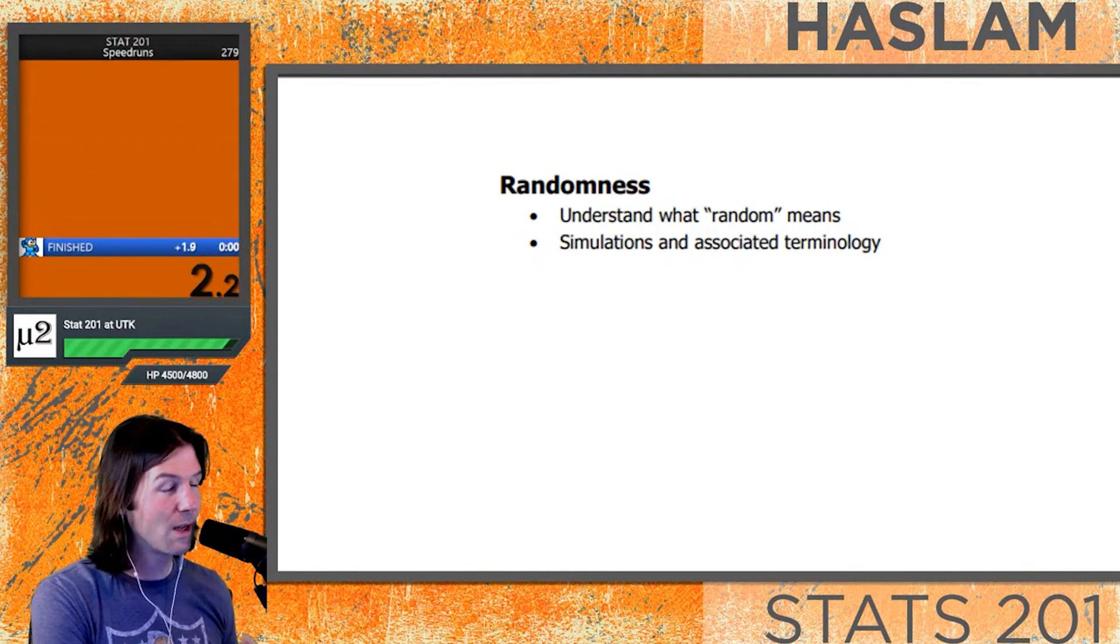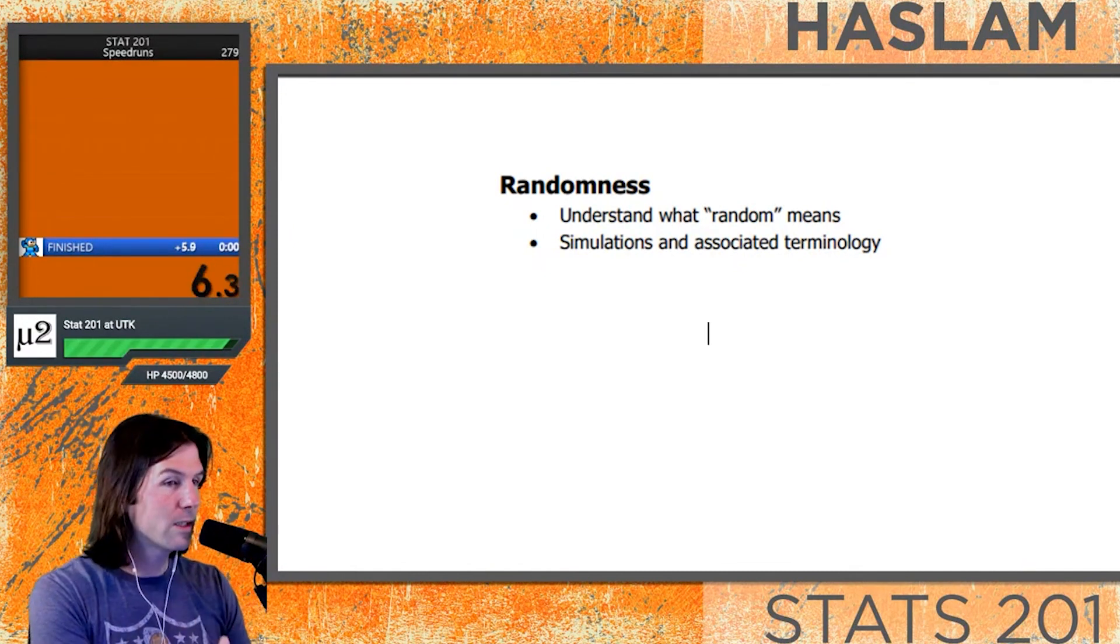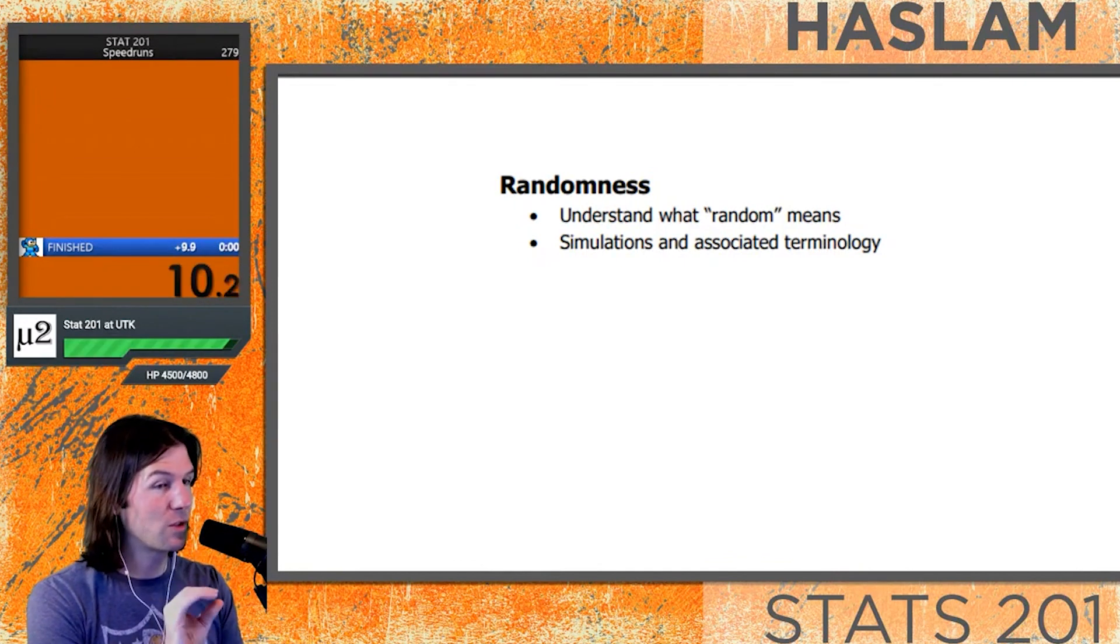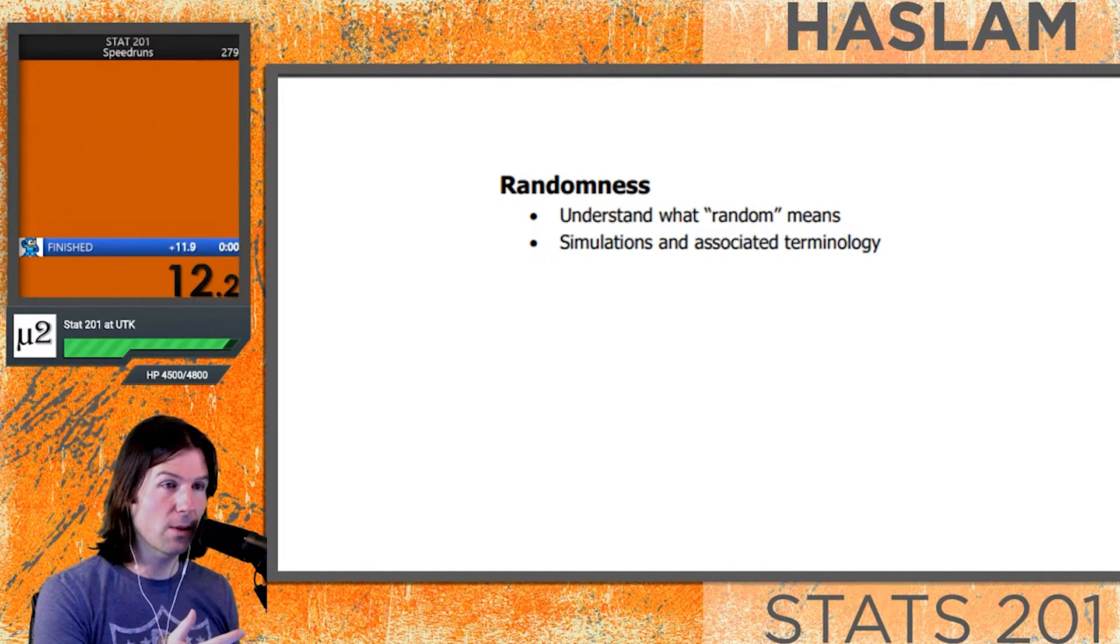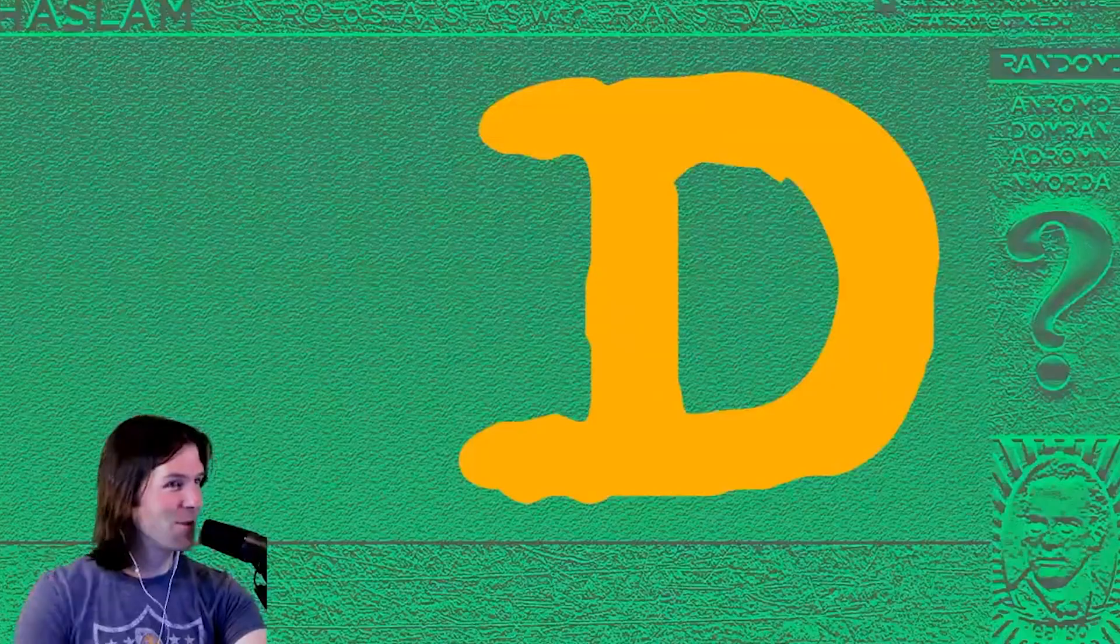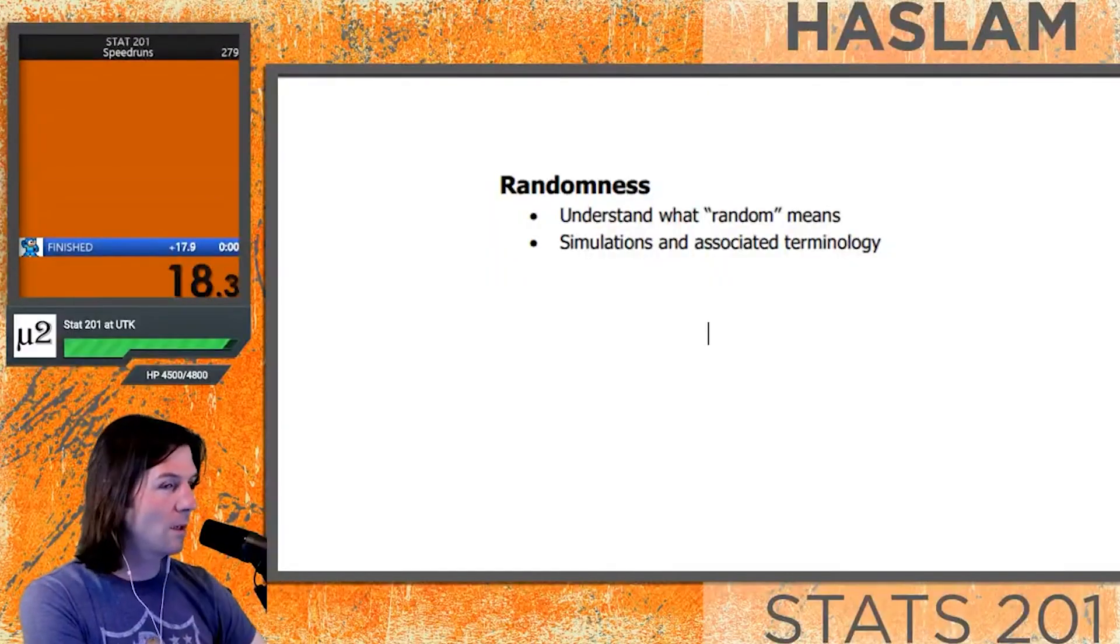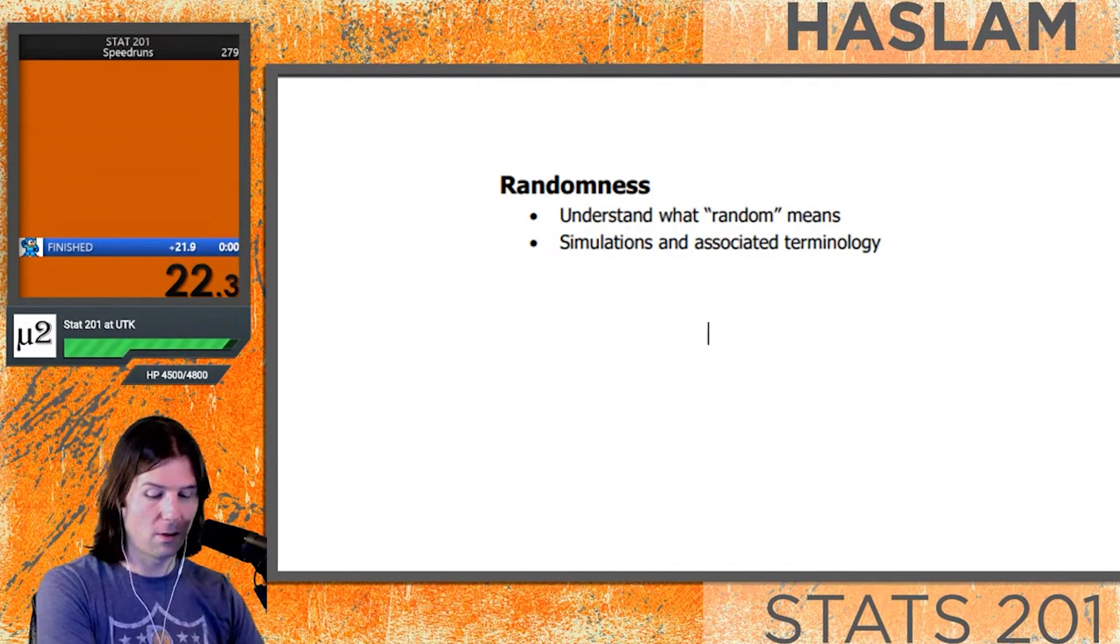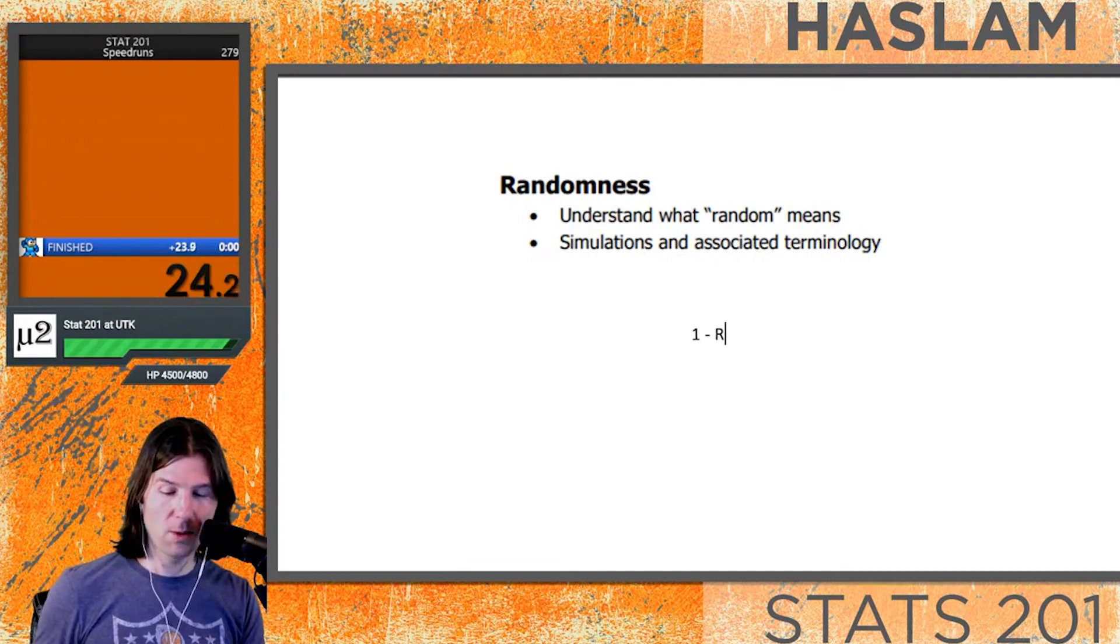When it comes to randomness, there's a lot to talk about. What does randomness mean? Randomness is something statisticians use as a tool. We love randomness. When it comes to randomness, we use it as a tool to do two things: one, take random samples.